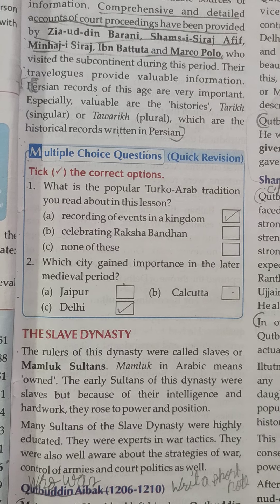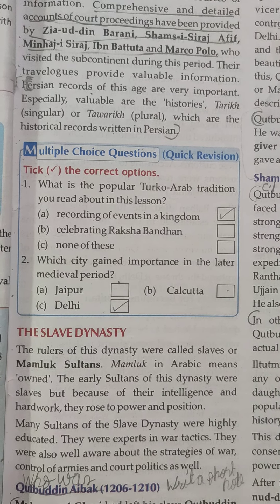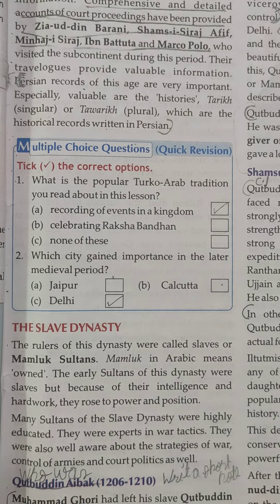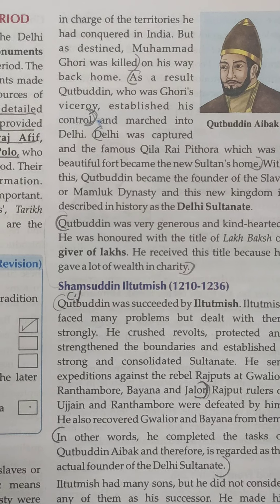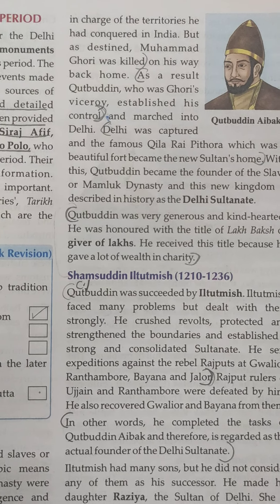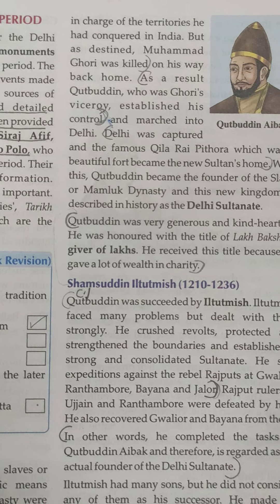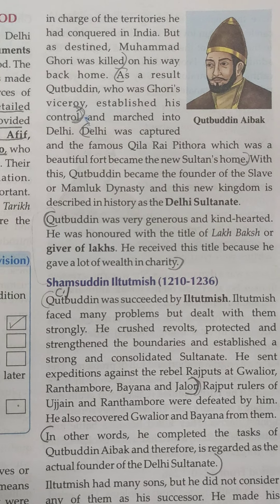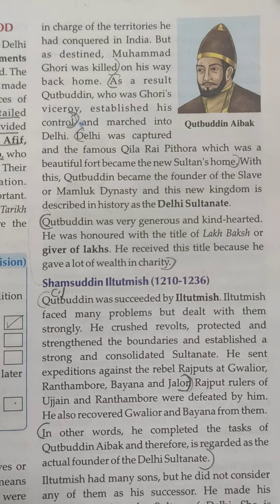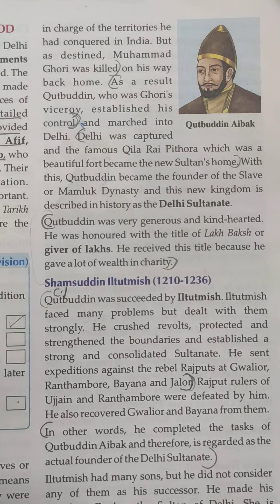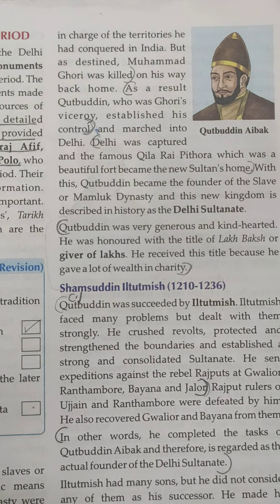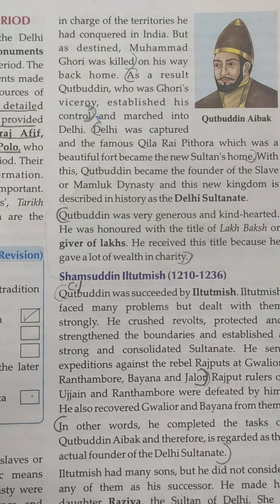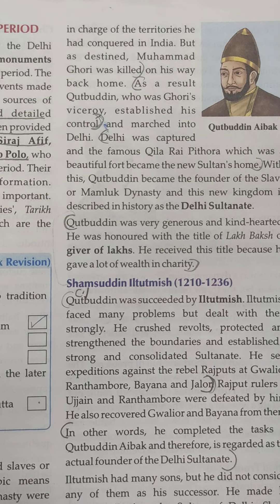The first ruler we will study is Qutbuddin Aibak, who ruled from 1206 to 1210. Muhammad Ghori had left his slave Qutbuddin Aibak in charge of the territory he had captured in India. However, as destined, Muhammad Ghori was killed on his way back.